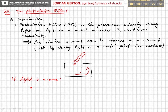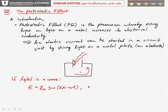If light were a wave, then we would describe that wave as having some amplitude — the electric field of that wave having some amplitude — and then some sinusoidal varying function. The intensity of that wave, or the energy associated with it, the energy per unit time, would be at least proportional to E₀² sin²(kx − ωt). That is, it's proportional to the electric field squared.